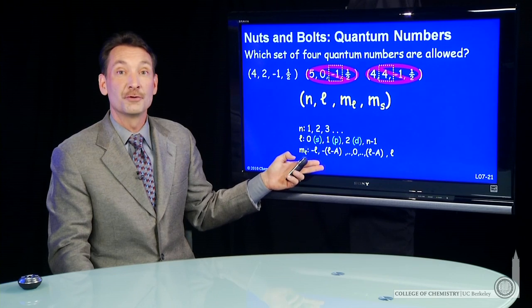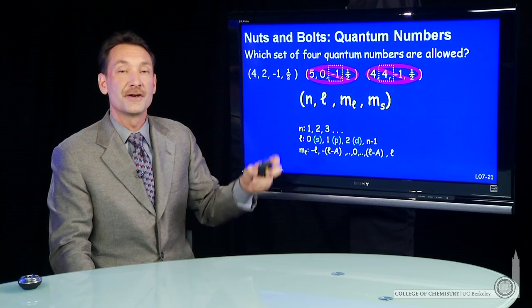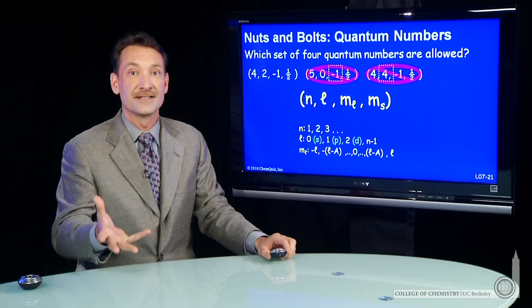So you have to very carefully apply your rules to see which quantum numbers are allowed. That determines which orbitals exist around an atom.